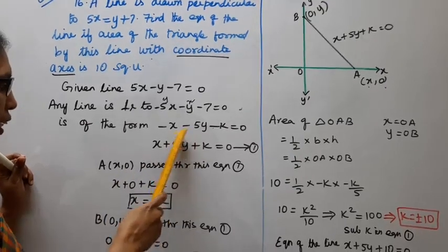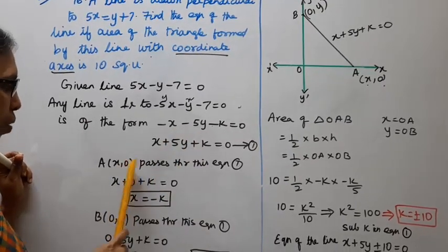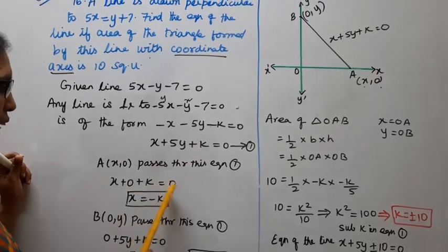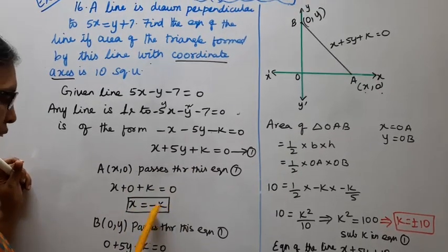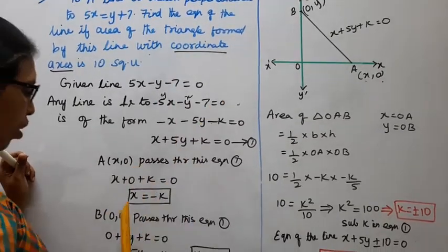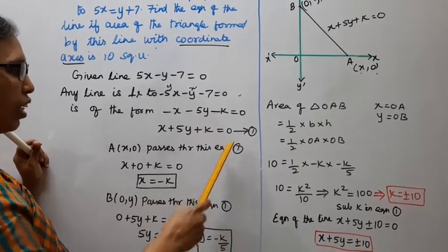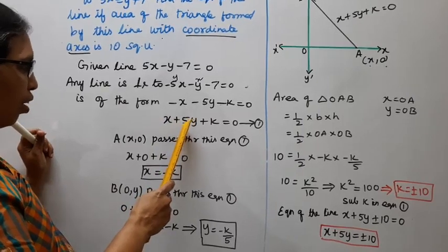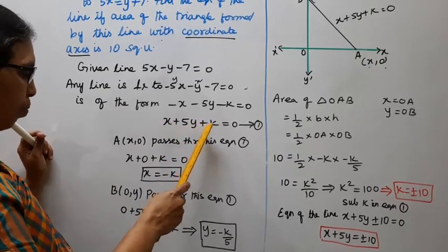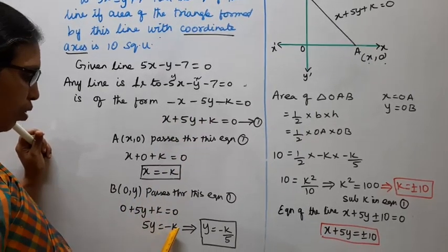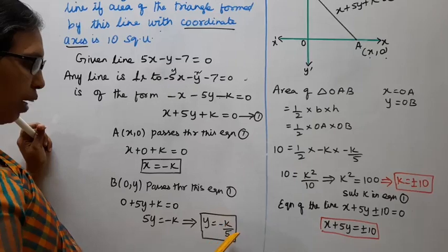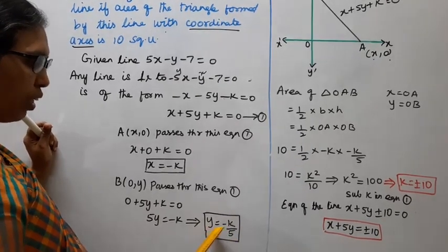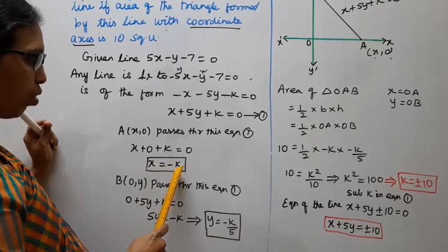Point B is at (0, y). Substituting into x + 5y + k = 0: 0 + 5y + k = 0, so 5y = -k, giving y = -k/5. Therefore B is (0, -k/5).